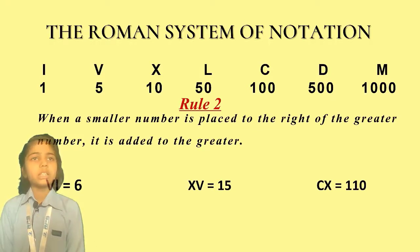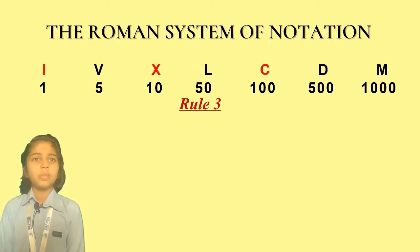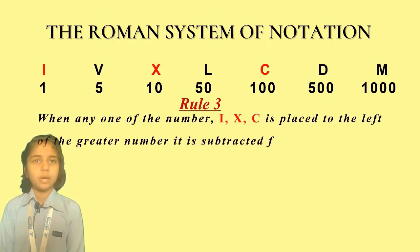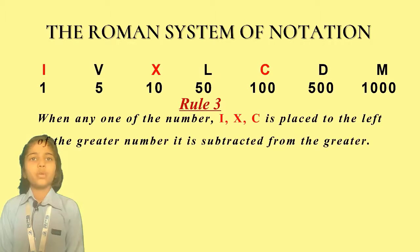Rule number 3. When any one of the numbers I, X, C is placed to the left of the greater number, it is subtracted from the greater. For example, IV equals 4, XL equals 40, XC equals 90.